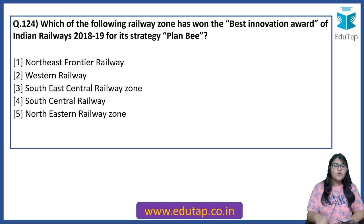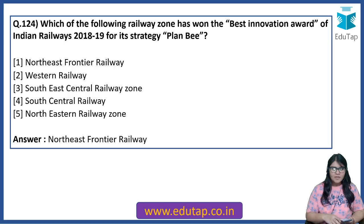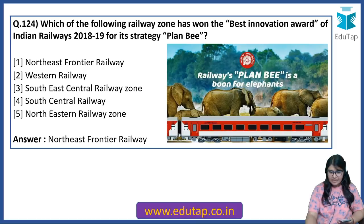Which of the following railway zones has won the Best Innovation Award of Indian Railways 2018-19 for its Strategy Plan B? The answer is Northeast Frontier Railway. This particular railway zone has won the Best Innovation Award and has come out with the strategy of Plan B.